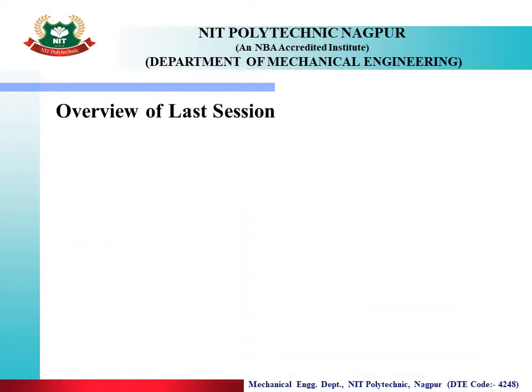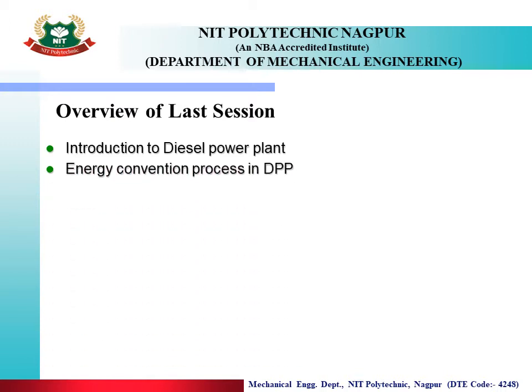Overview of Last Session: Let's see what we learned in the last session — Introduction to Diesel Power Plant, and the Energy Conversion Process in Diesel Power Plant. Diesel fuel is mixed with air inside the engine, converting chemical energy into mechanical energy. This mechanical energy is then converted into electrical energy using a generator. We also covered the different systems in a diesel power plant.